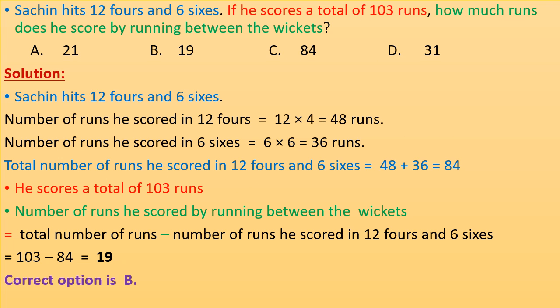Sachin hits 12 fours and 6 sixes. If he scores a total of 103 runs, how many runs does he score by running between the wickets? Sachin hits 12 fours and 6 sixes. Number of runs he scores in 12 fours = 12 × 4 = 48 runs. Number of runs he scores in 6 sixes = 6 × 6 = 36 runs. Total number of runs he scores in fours and sixes = 48 + 36 = 84.